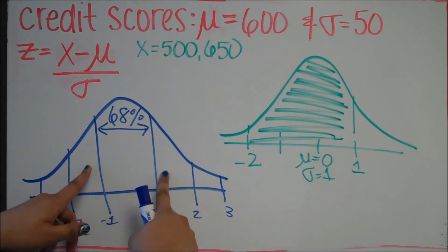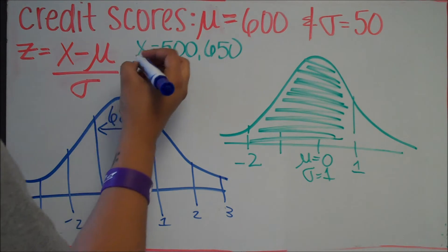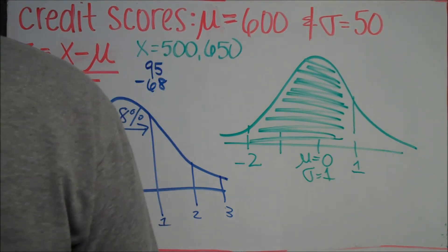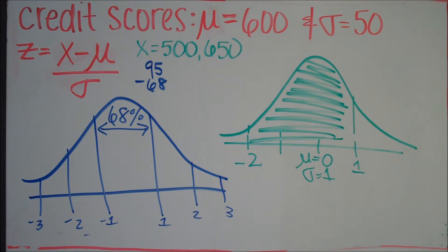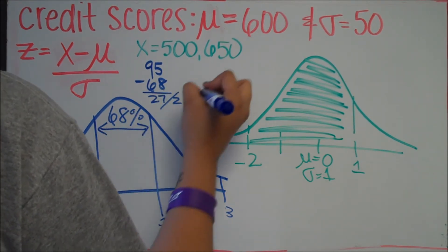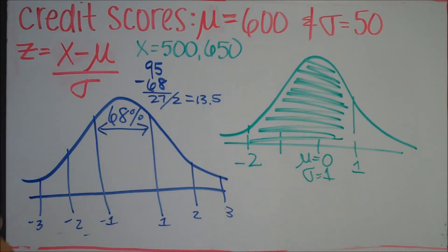We're going to divide up this 95 so that we know the area in both of those tails. So you want to take 95 minus 68. You should get 27. You want to divide that by 2, and you should get 13.5. So that's how much is in each of those tails. So you're going to write that in.